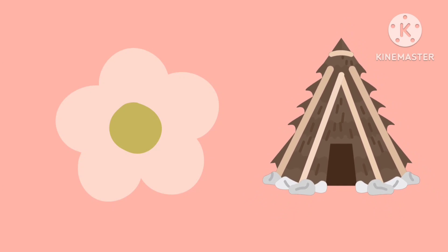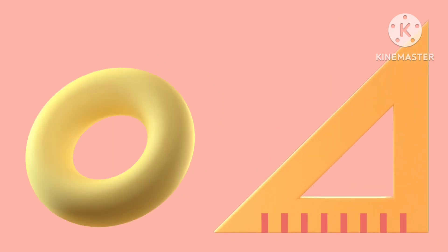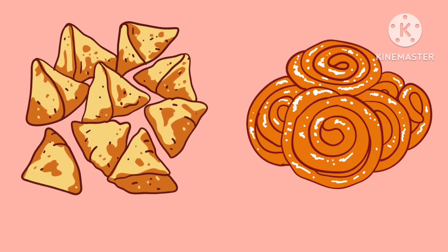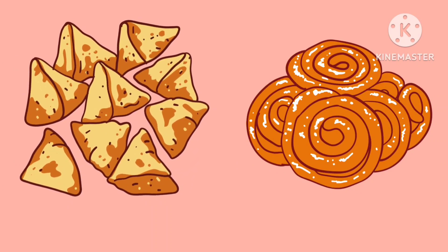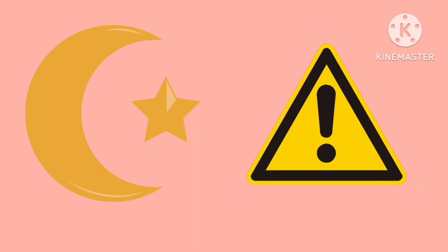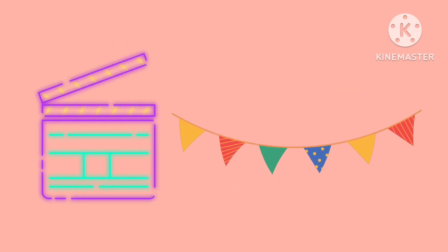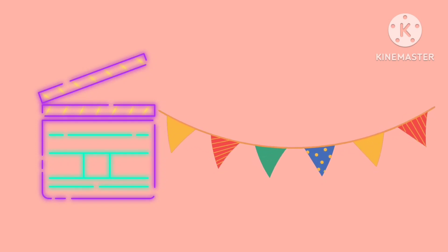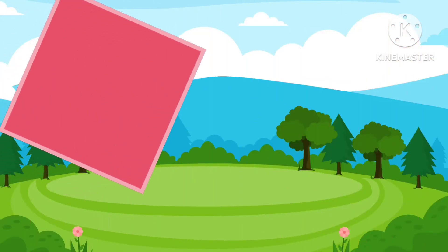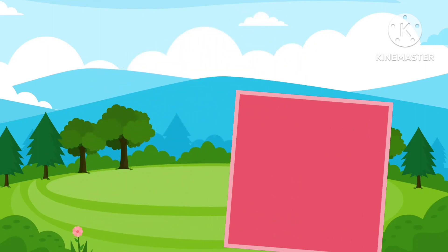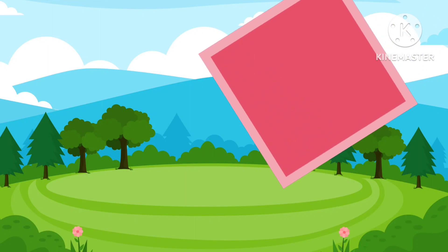This hut is a triangle. This scale also has a triangle shape. It also has a triangle shape. Samosa is also a triangle. This sign also has a triangle shape.